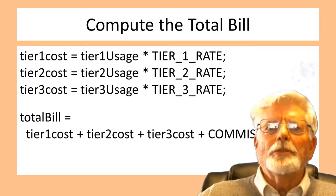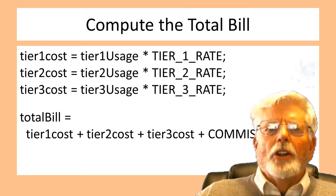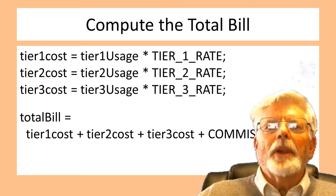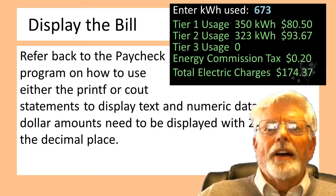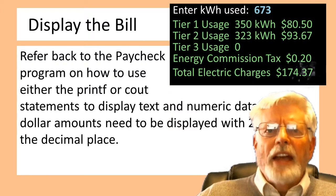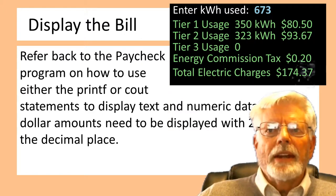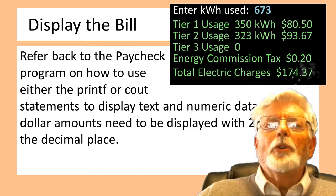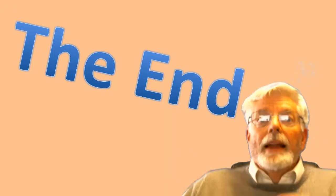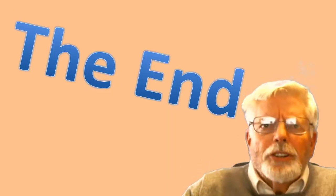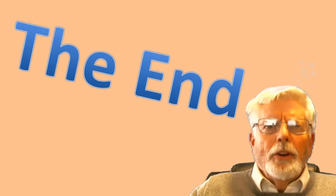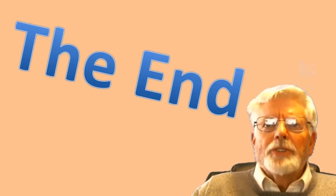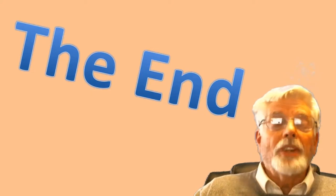Computing the costs is easy — just multiply the usage by the billing rate for each tier. The total bill is the cost for each tier plus the commission tax. The last thing to do is display the bill using five lines — refer back to the paycheck program on how to use printf or cout statements to display text and numeric data. Dollar amounts need to be displayed with two digits past the decimal. This is the end of the discussion for the electric bill. I hope you are able to understand it and use the if, else if, else statements to solve many more programming problems in the future. Bye for now.